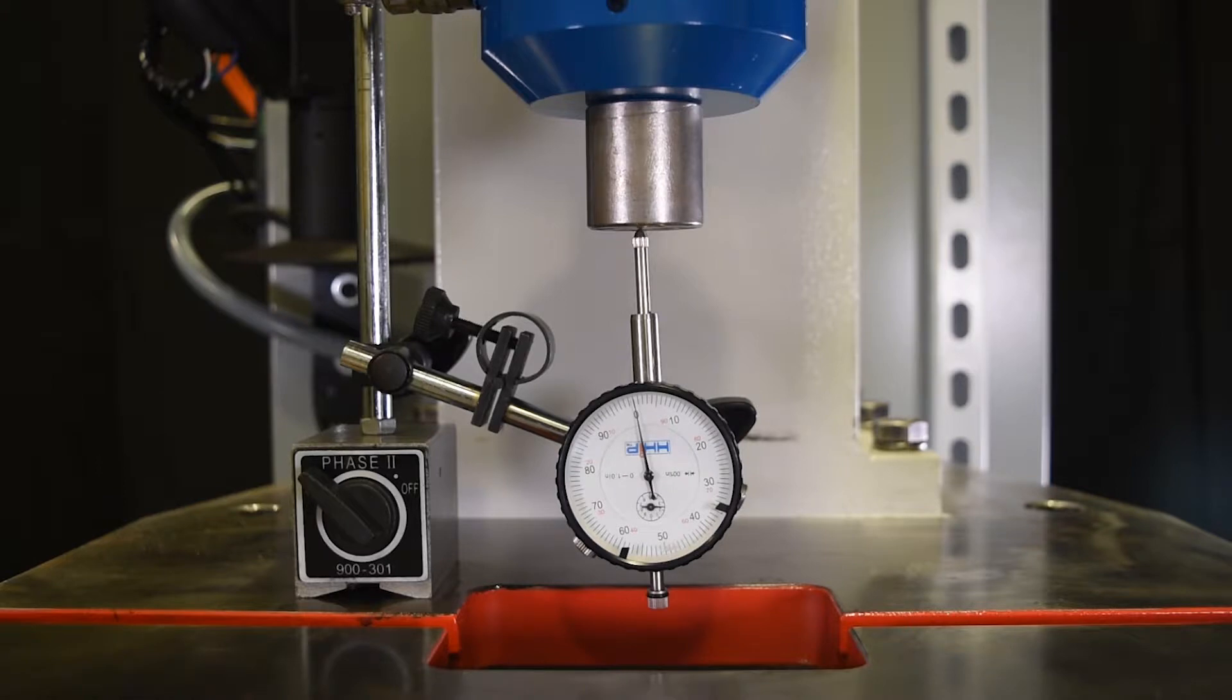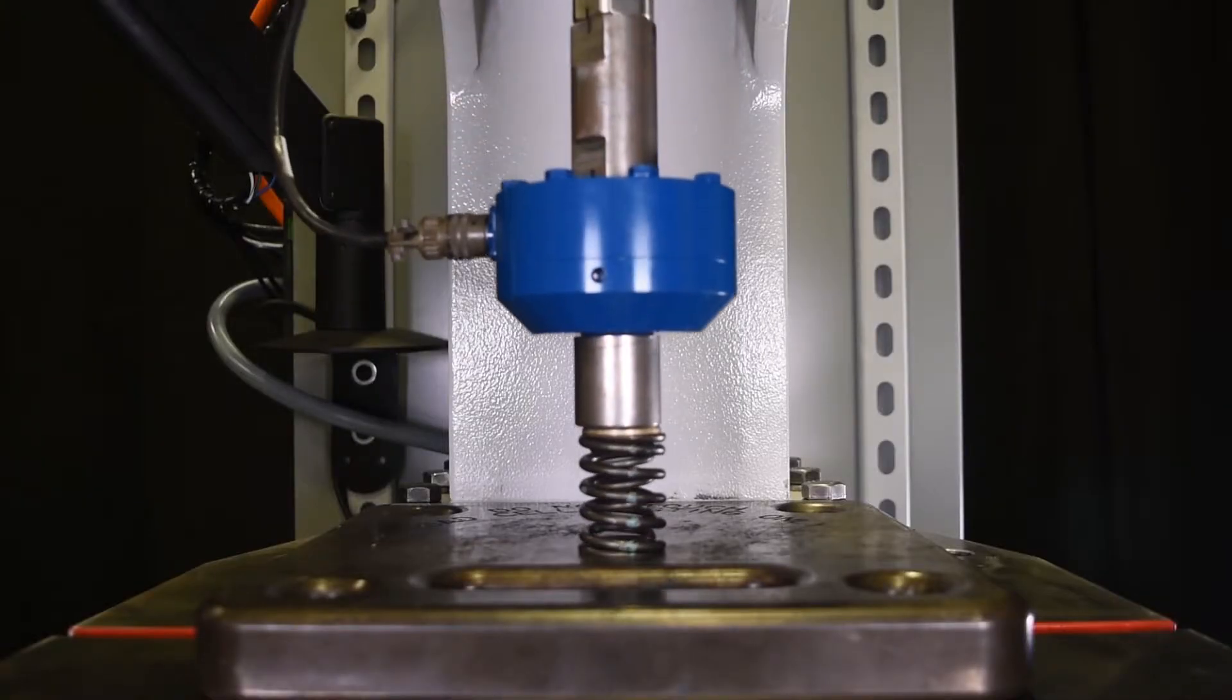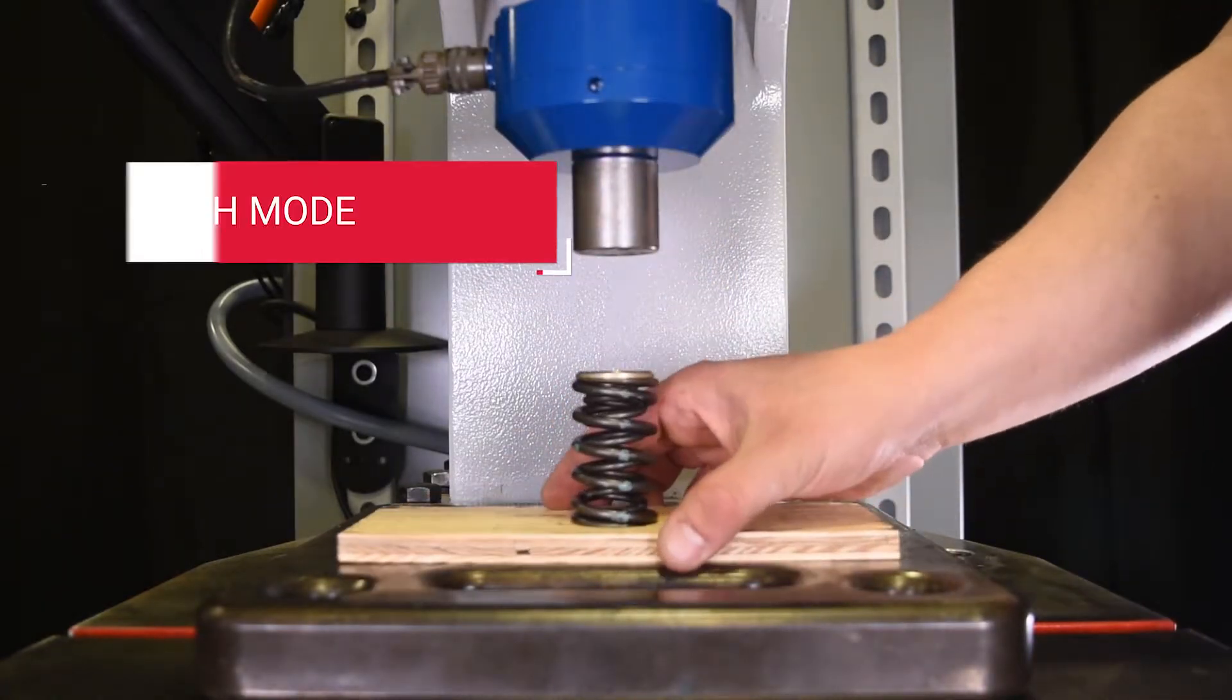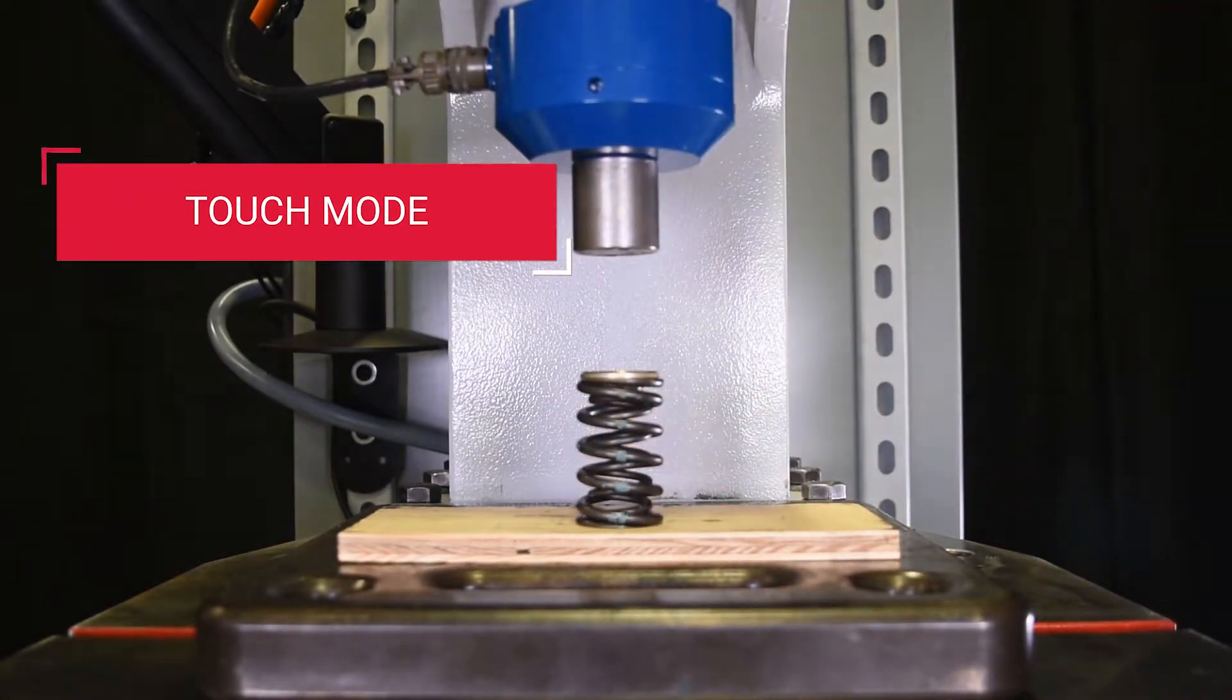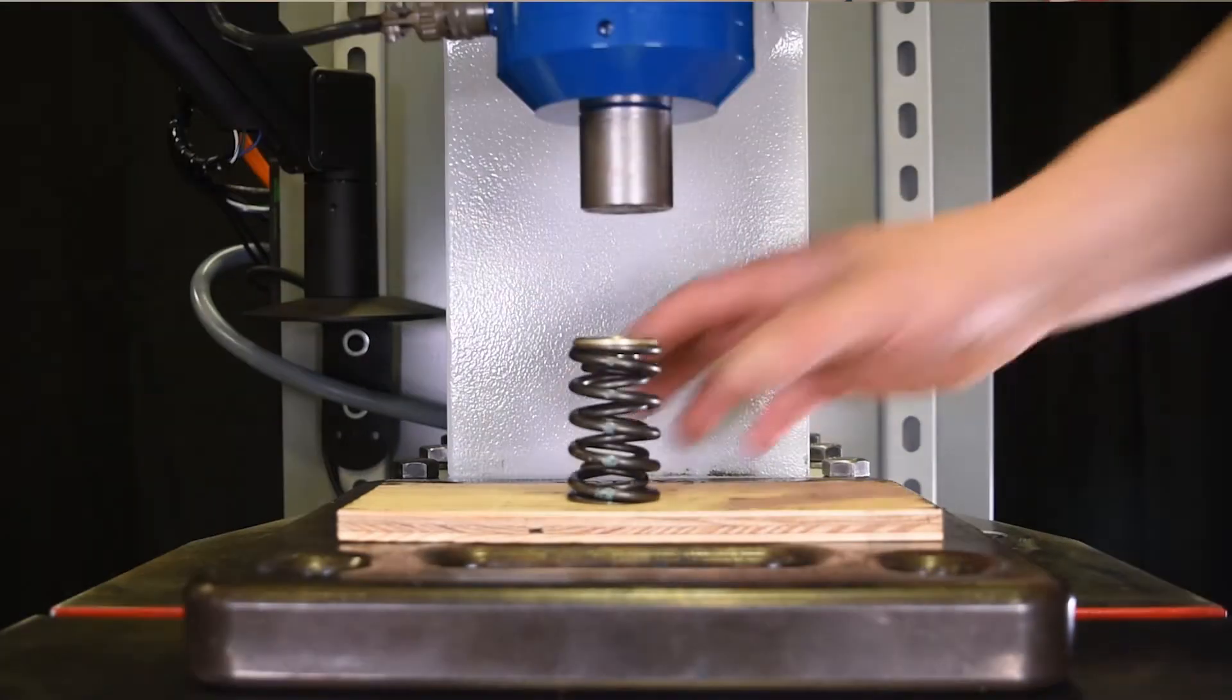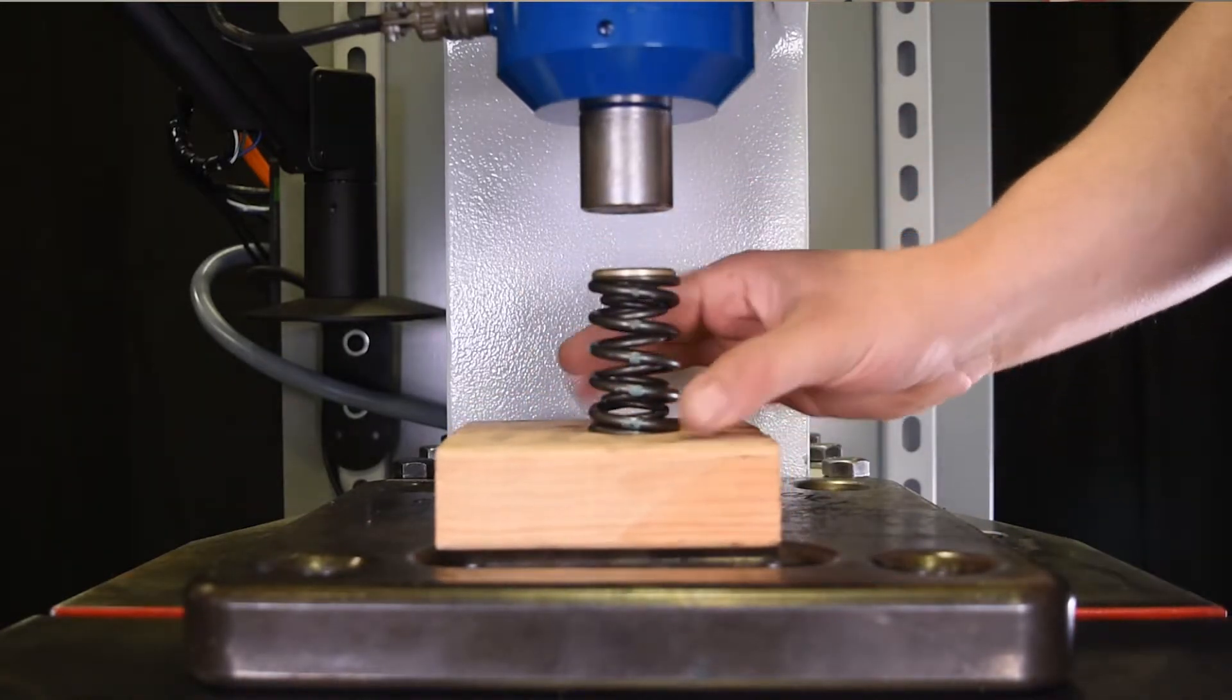In touch mode, the press will continue to travel down until it senses that it has reached resistance. Once the press reaches the part, you can program the press to either go to a specified force after touching the part or go to a specified position after touching the part.